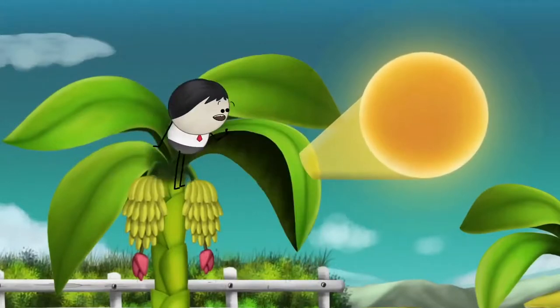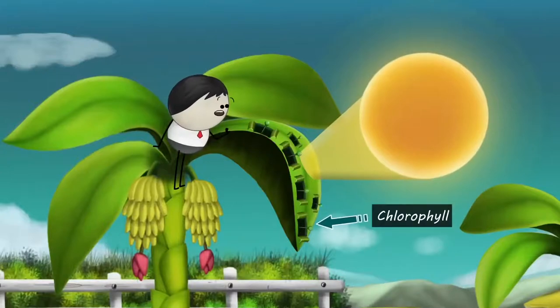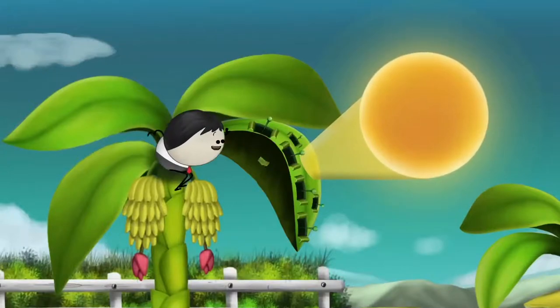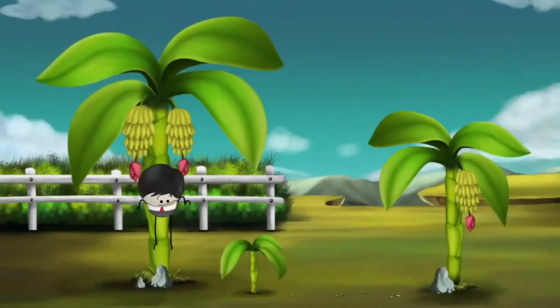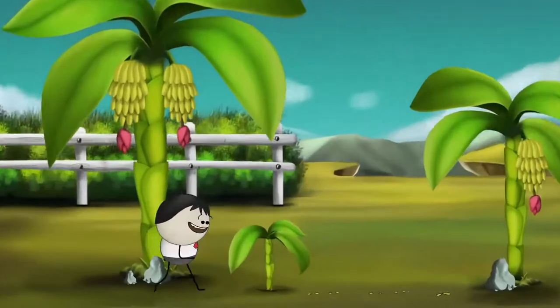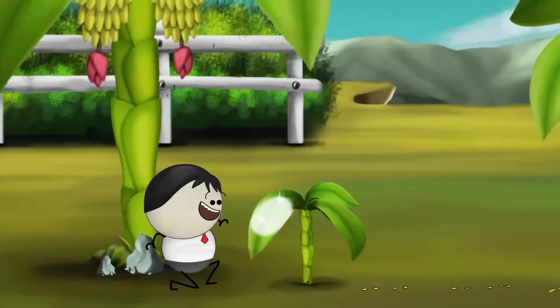Hence, to trap maximum sunlight, there is more chlorophyll on the upper surface as compared to the lower surface. Hey. You forgot. You also wanted to know why is the upper surface of the leaf shinier, right?